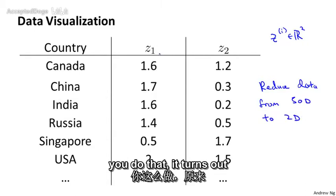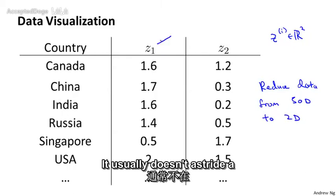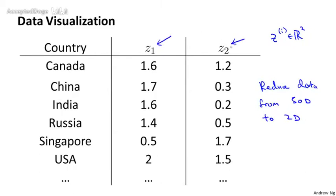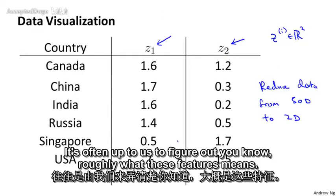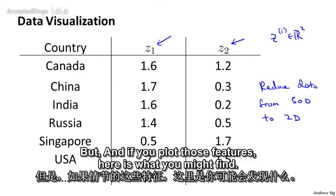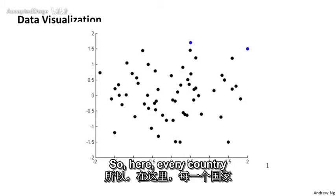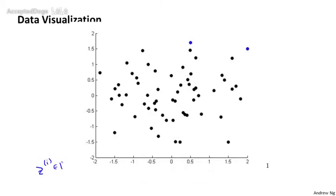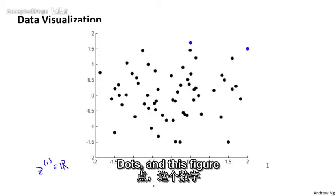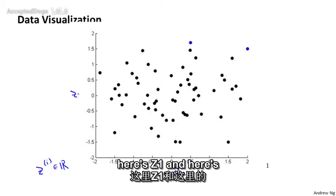When you do that, it turns out that if you look at the output of the dimensionality reduction algorithms, it usually doesn't ascribe a particular meaning to these new features z1 and z2. It's often up to us to figure out roughly what these features mean. But if you plot these features, here's what you might find. Every country is represented by a point zi which is in R2, so each of those dots in this figure represents a country. Here's z1 and here's z2.